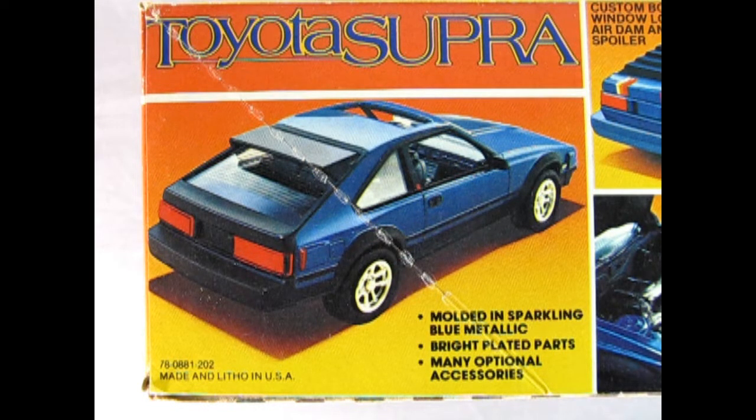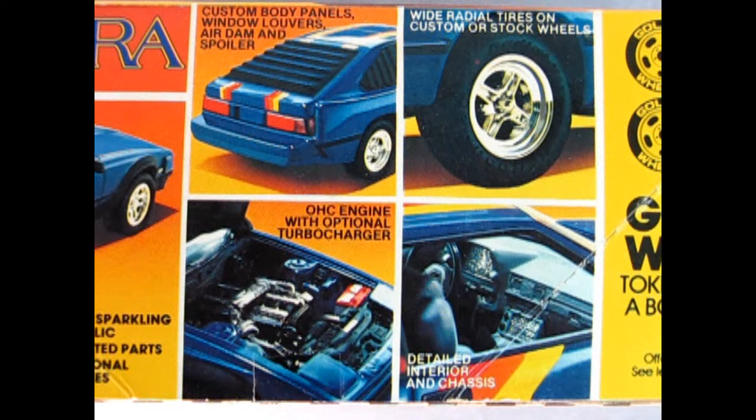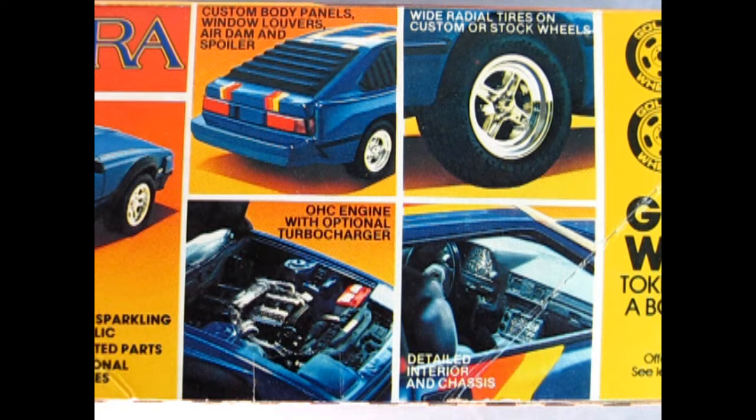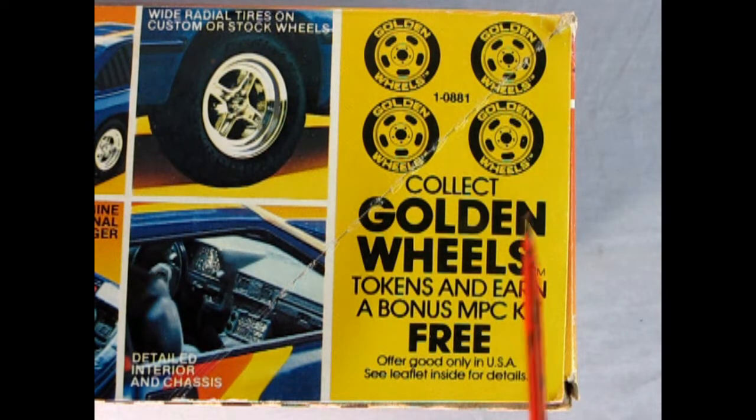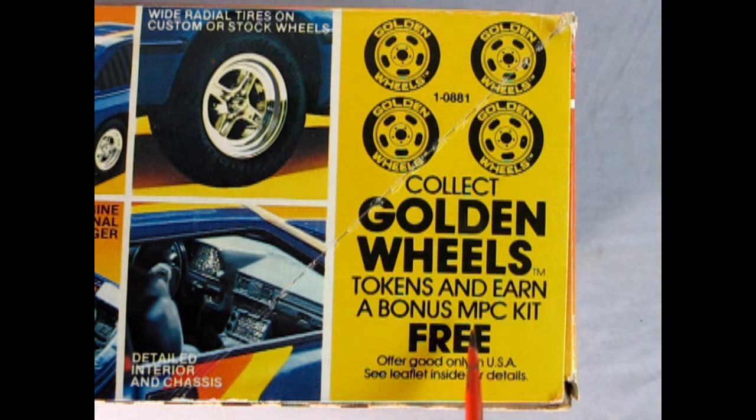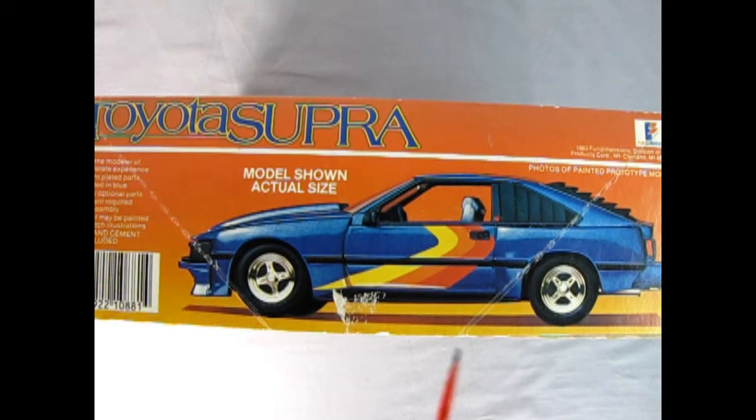On this side of the box we can see the amazing features. This model is molded in sparkling blue metallic, has bright plated parts and many optional accessories. We get custom body panels, window louvers, air dam and spoiler, overhead cam engine with optional turbocharger, wide radial tires on custom or stock wheels, and a detailed interior and chassis. With this model kit of this era, we also had the golden wheels - you collected the golden wheels, cut them out, and sent the tokens over to MPC and you received a bonus MPC model kit absolutely free.